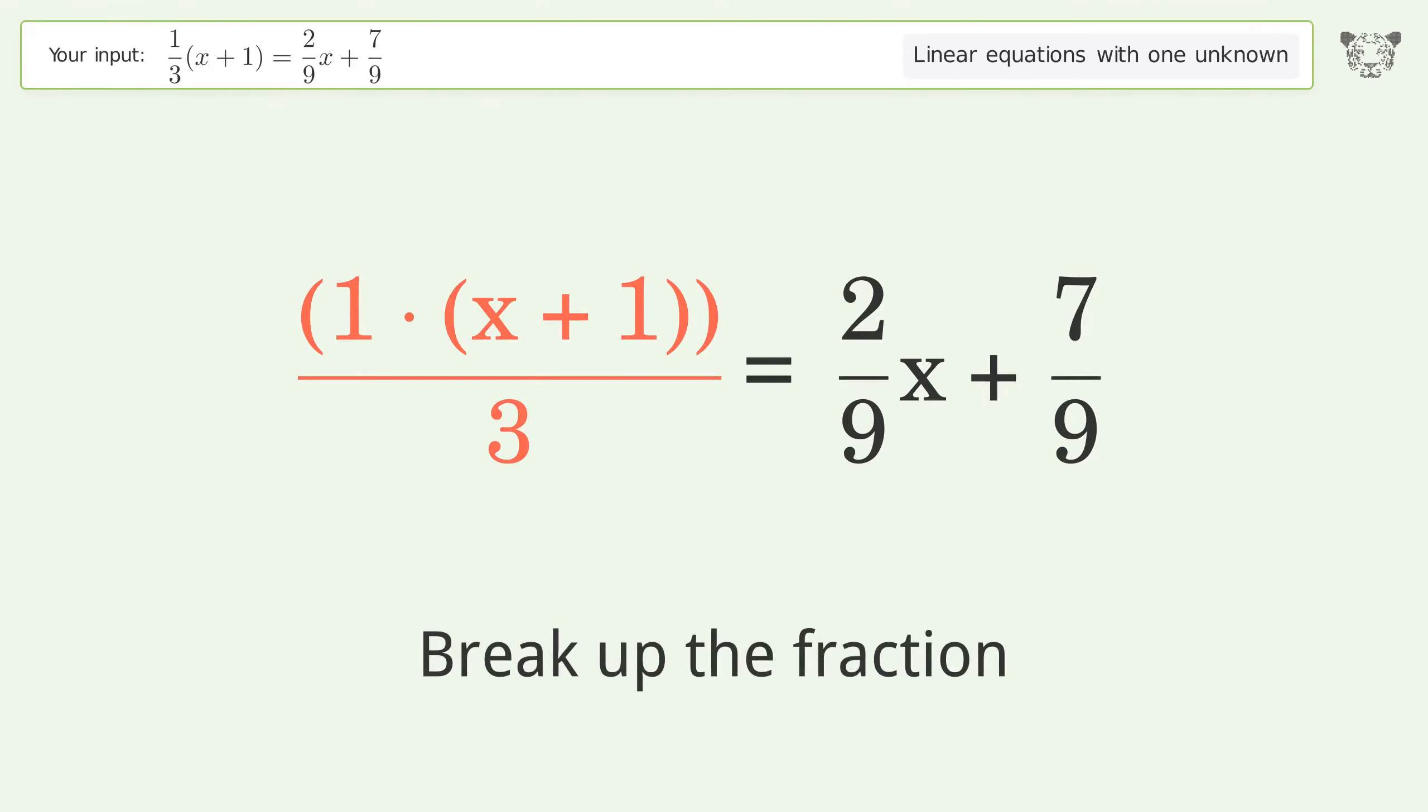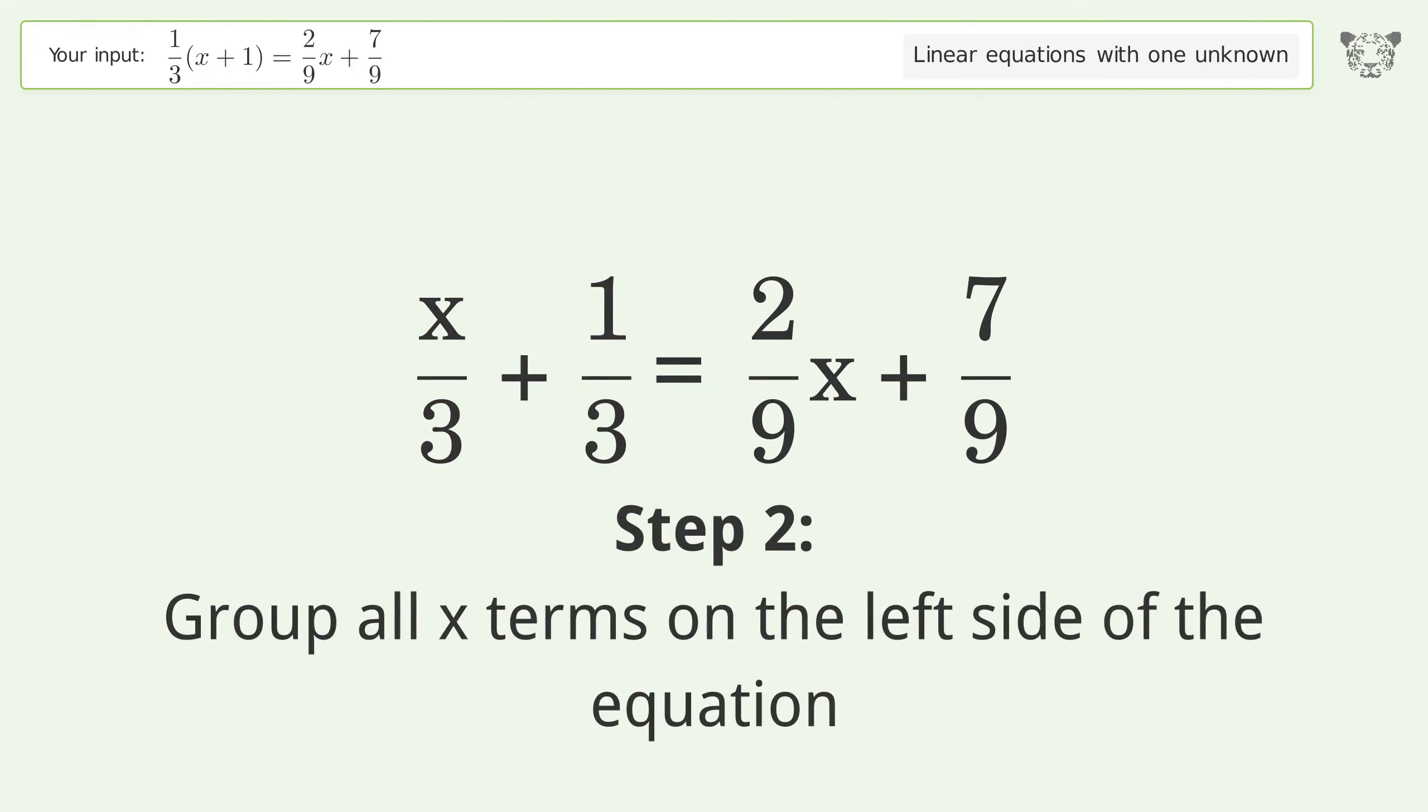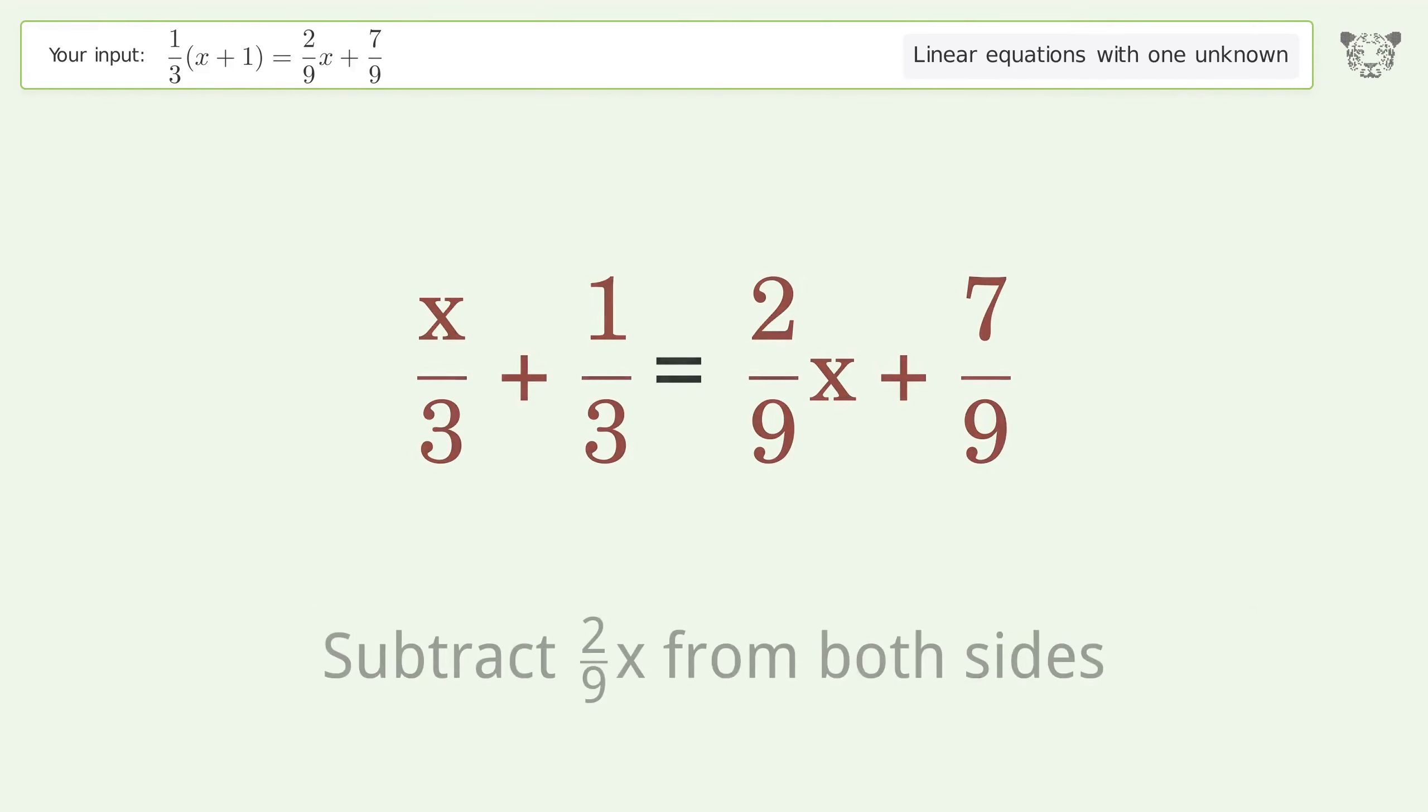Break up the fraction. Group all x terms on the left side of the equation. Subtract 2 over 9x from both sides.